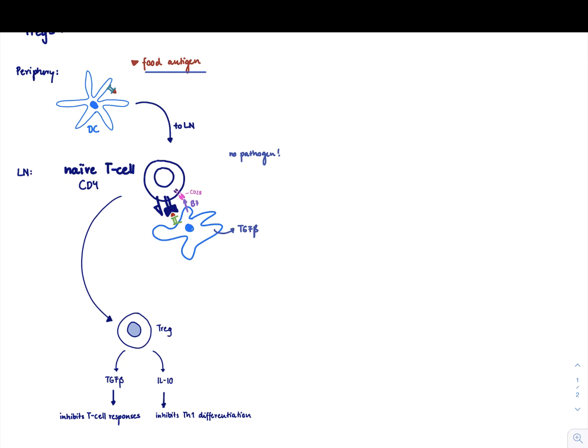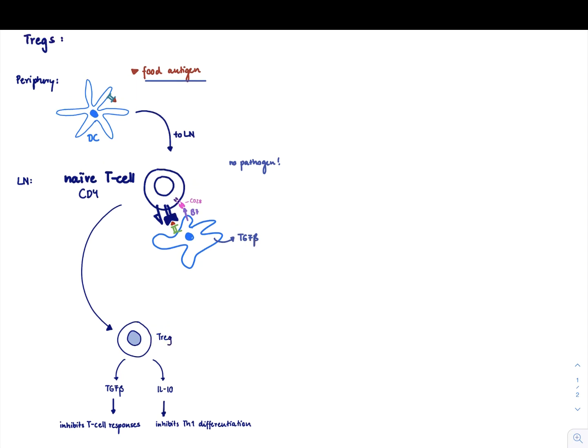So in this scenario where we have no pathogen around, and in case the B7, this very low B7 expression on the dendritic cell is close to the TCR-MHC interaction, we could get a signal 2, and the dendritic cell makes TGF-beta, and that leads to the differentiation into a T-regulatory cell. This concludes the video on T-regulatory cells.